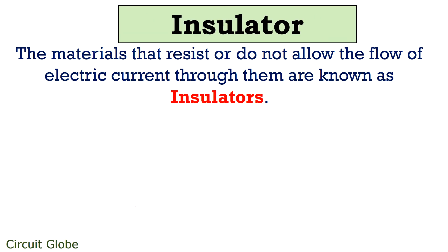Now let's understand what are insulators. The materials that completely resist the flow of electric current through them are known as insulators. Here free electrons are negligibly present, thus these show high resistivity towards the flow of electric current.